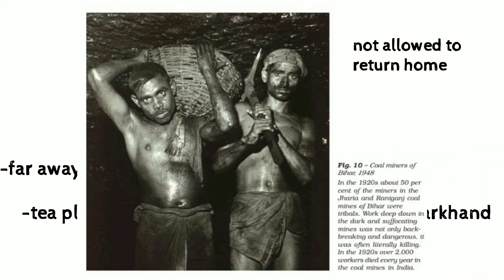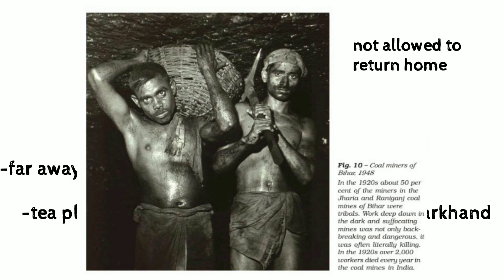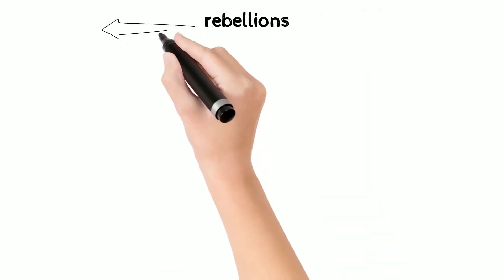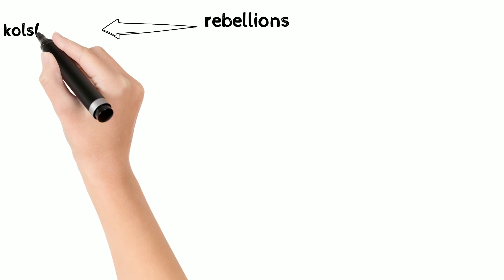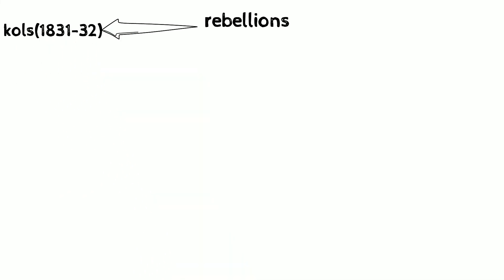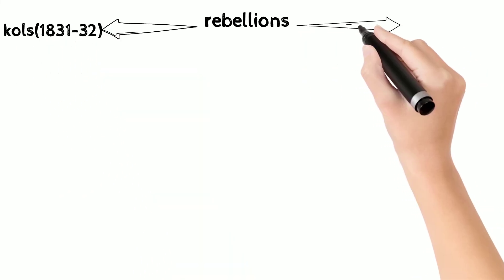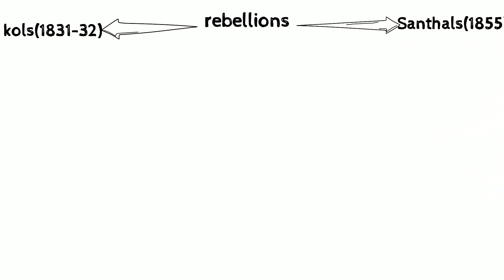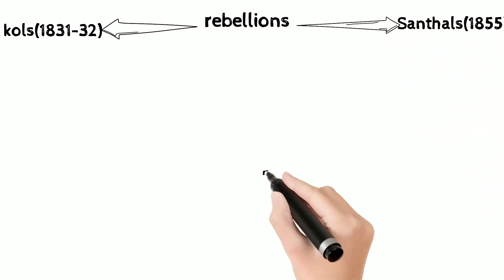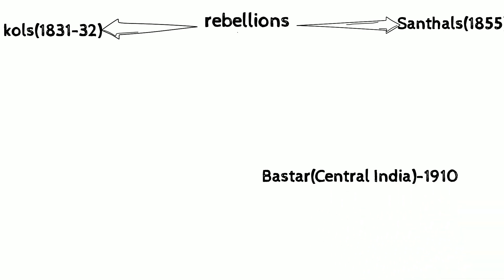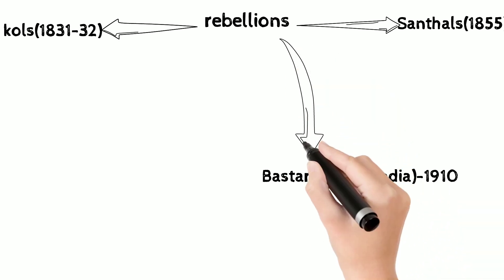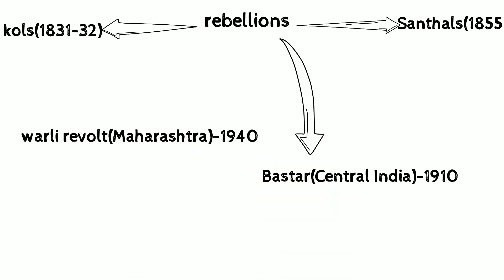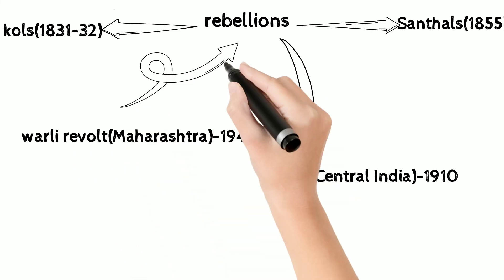Several rebellions took place in India: the Kols rebellion in 1831, the Santhals revolt in 1855, the Bastar revolt in central India in 1910, and the Wali revolt of Maharashtra in 1940. These four revolts paved the way for tribal rights.